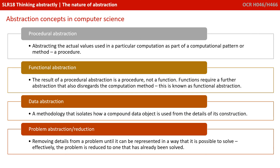Data abstraction is a methodology that isolates how a compound data object is used from the actual details and internal workings of how it's really constructed under the hood. Finally, we have problem abstraction or reduction — this is removing details from a problem until you can represent that problem in a way that is possible to solve, effectively because the problem has been reduced to one which has already been solved in the past.